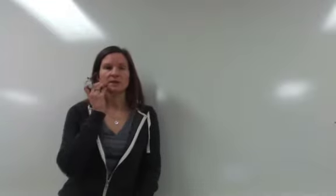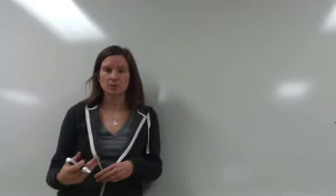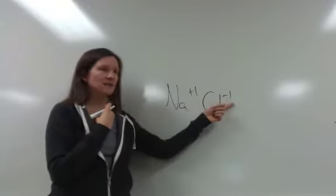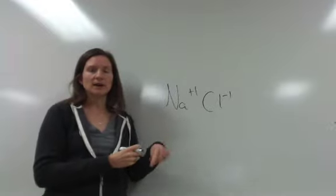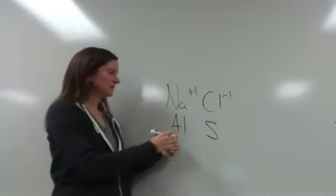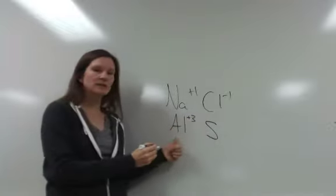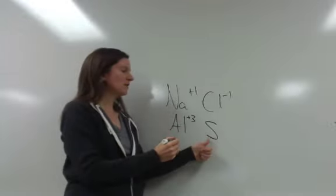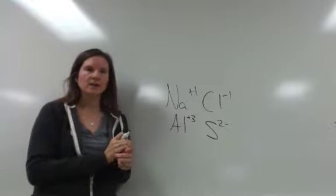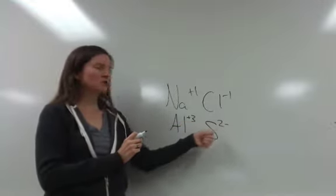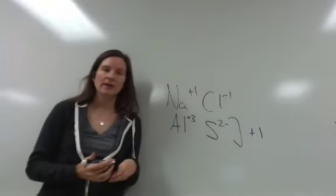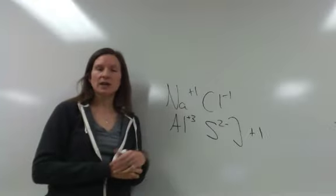Sodium always wants to make a plus one. Chlorine always wants to make a minus one. If these two things come together, once you add the plus and the minus together, you get a zero, they come together at a one-to-one ratio. Aluminum with sulfur, on the other hand, aluminum would like to transfer electrons to create a plus-three charge, and sulfur would like to take on electrons to make a two-minus charge. If you added the plus-three to the minus-two, you would get an overall charge of plus-one. And that doesn't happen. We know that all ionic compounds come together to make a neutral compound.